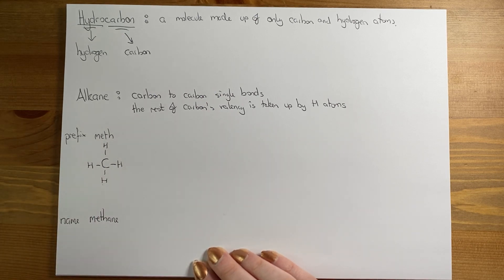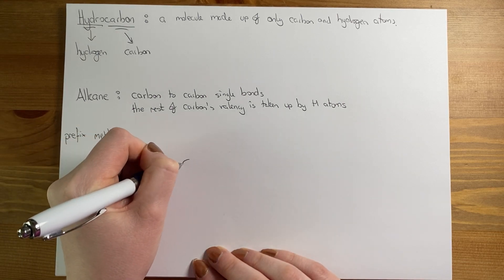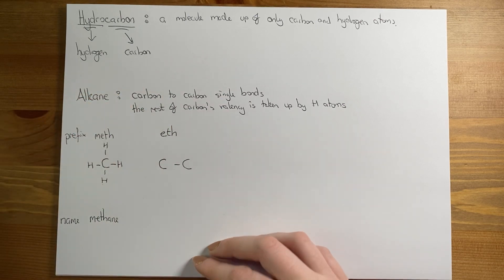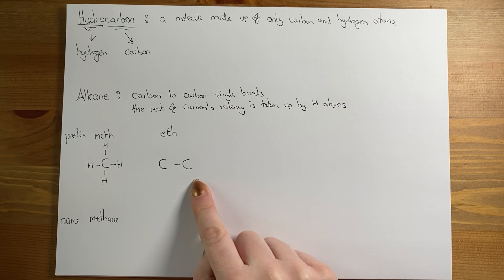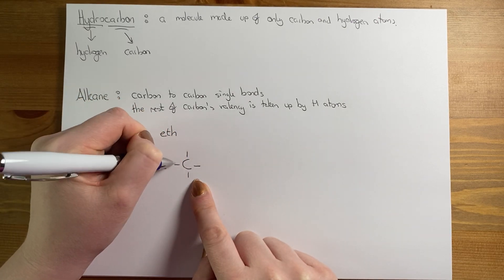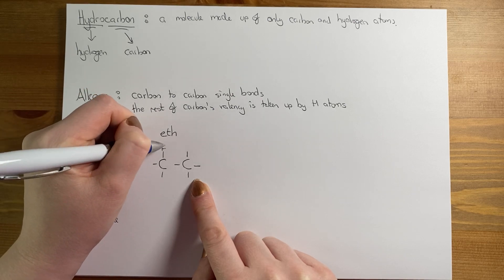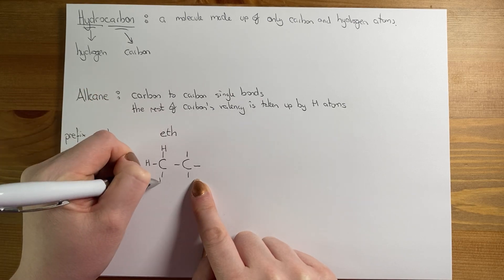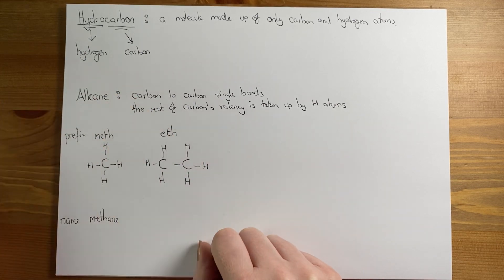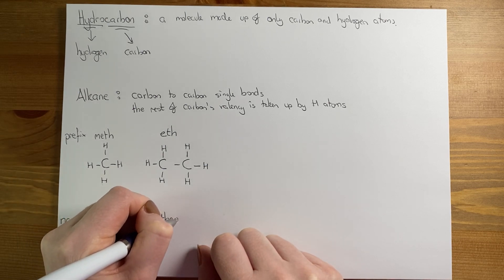If I have two carbons, I would draw my first carbon bonded to my second carbon. The prefix for two is 'eth'. Each carbon can form four bonds in total — one bond is already used for the carbon-carbon bond, leaving three more for each end carbon, and these are all filled with hydrogen atoms. The name of this alkane is ethane.